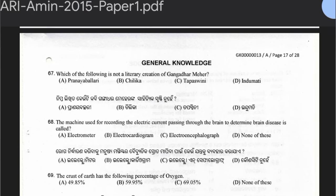Question 67: Which of the following is not a literary creation of Gangadhar Meher? Option A — Pranay Ballari; Option B — Chilika. The answer is option B — Chilika, because Chilika is a literary work by someone else, not Gangadhar Meher.